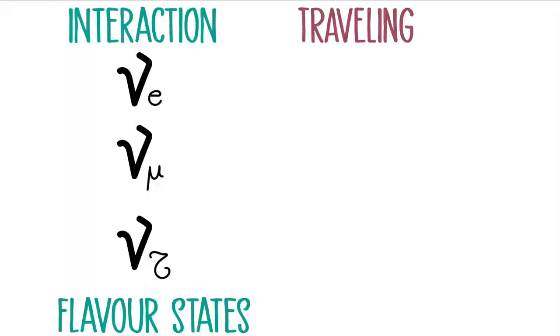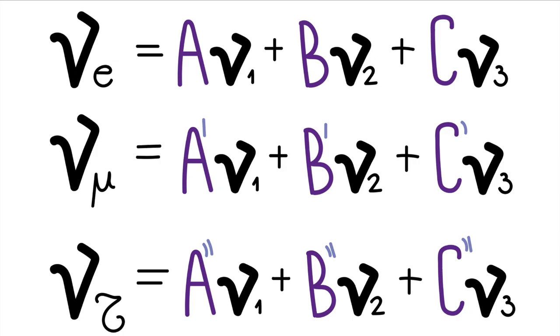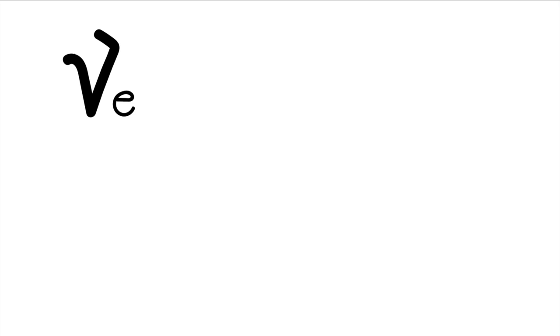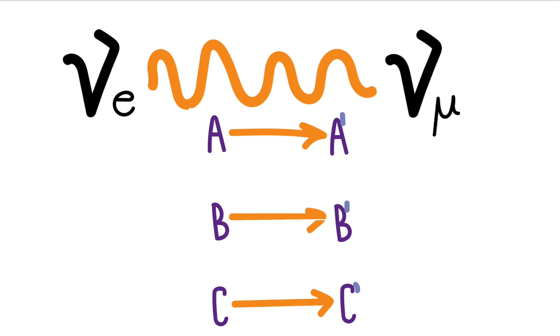While traveling, there are three different kinds of neutrinos characterized by their masses. The relations between these states are not one-to-one; to the contrary, each flavor state is a linear combination of the mass states. This weirdness allows neutrinos to change their flavor identity. So the neutrino that was produced as an electron neutrino can travel a certain distance and be detected as a muon neutrino. We call this neutrino oscillation.